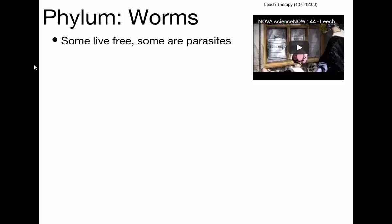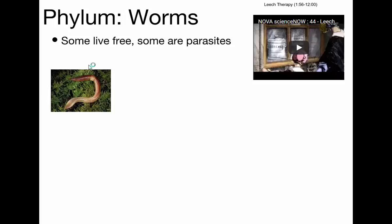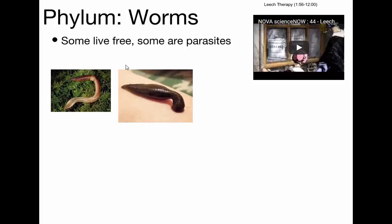Their waste helps put nutrients back into the soil for plants to use. You may have seen their waste — they're called earthworm castings. If you ever see on a patch of mud some holes with a little pile of stuff next to them, that's actually earthworm waste. It's really good for the soil. There are lots of other worms besides earthworms.